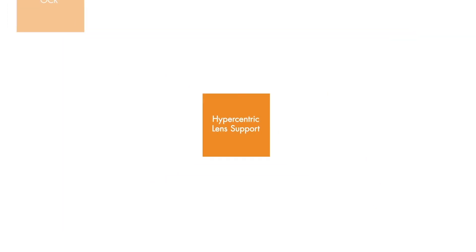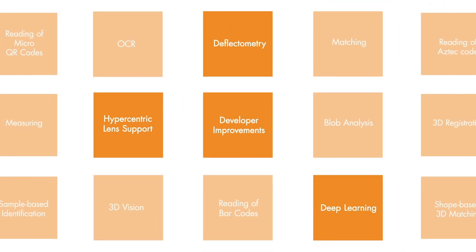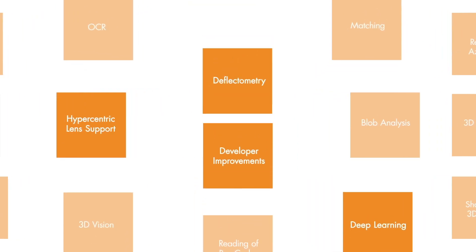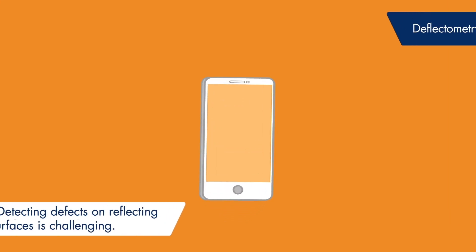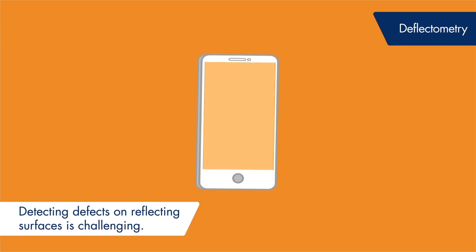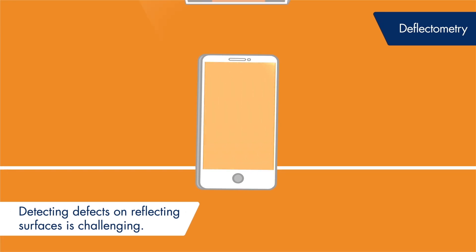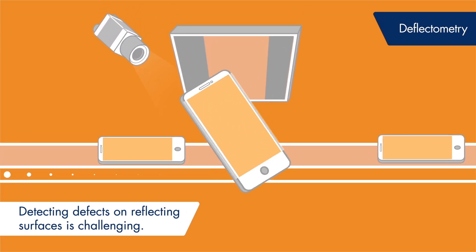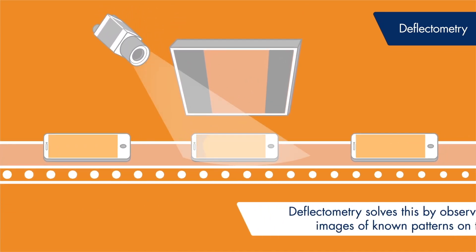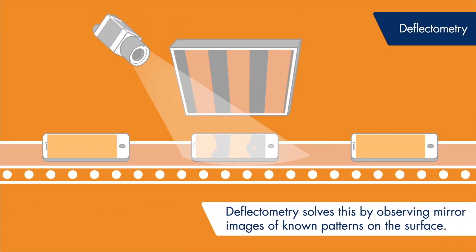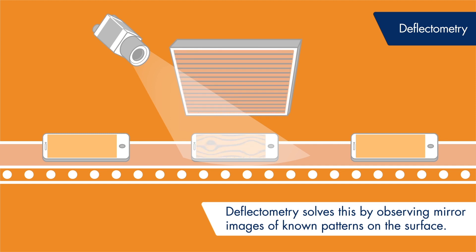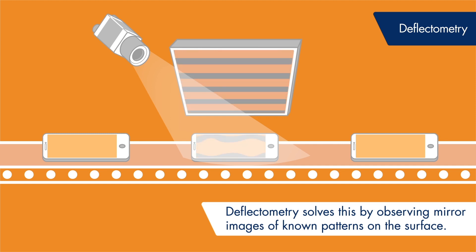Inspecting reflecting surfaces is challenging because the observer only sees the mirrored environment. HALCON enables users to inspect such surfaces by applying deflectometry — that is, observing mirror images of known patterns on the surface.